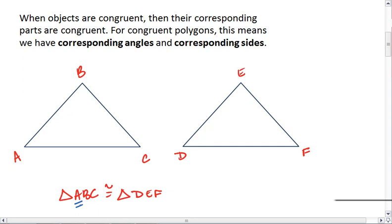To put A and D as the first letter in each triangle means that angle A is congruent to angle D, and that those are corresponding angles in this case. Having angle B and angle E in the middle means that angle B is congruent to angle E, and that those are corresponding angles.